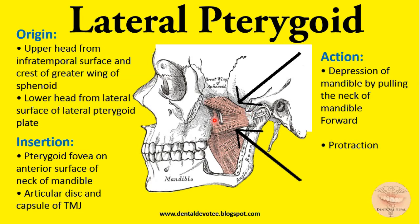The lower head originates from the lateral surface of the lateral pterygoid plate. For the action of the lateral pterygoid — when it shortens, the neck of the mandible is pulled forward and hence the mandible depresses downward. When this neck is pulled forward, the mandible is depressed downward. And also when it contracts, there will be forward movement or protraction of the mandible. So depression and protraction are brought about by the action of the lateral pterygoid.